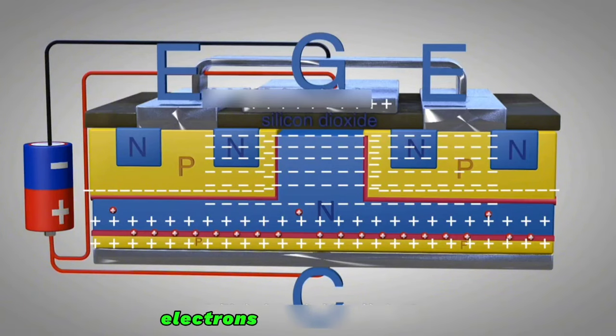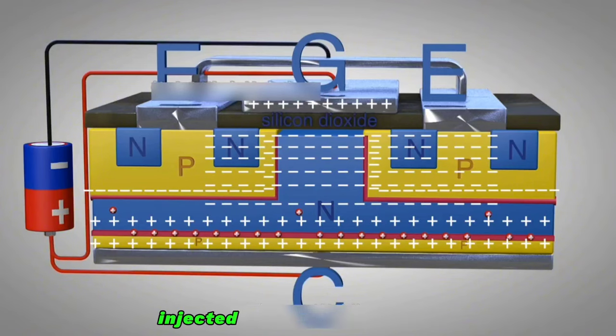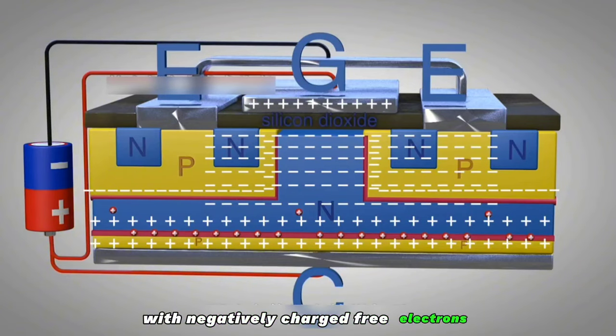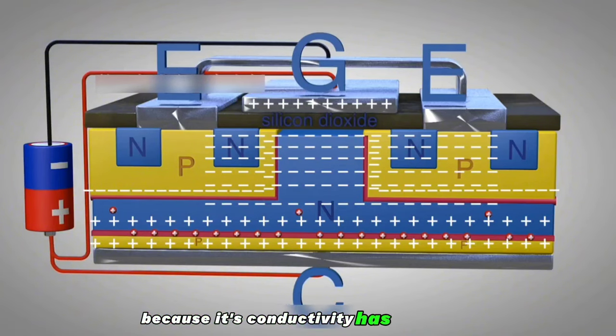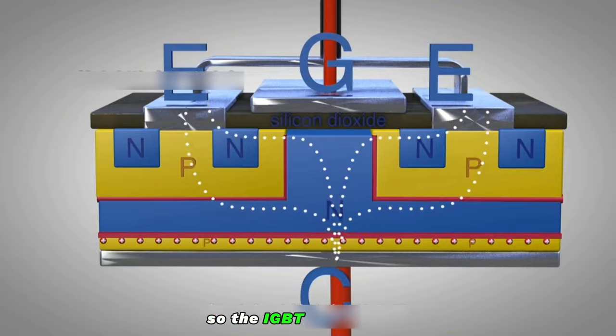In this way, electrons from the emitter flow from the N+ region to the N-drift layer. At the same time, hole carriers from P+ region are injected into the N-type drift layer. Due to the existence of the N-type drift layer, excess hole carriers combine with negatively charged free electrons. Because its conductivity has increased, causing the generation of electric current, the IGBT is turned on.